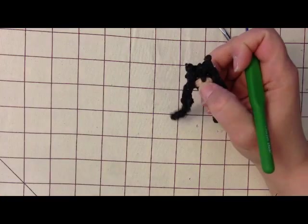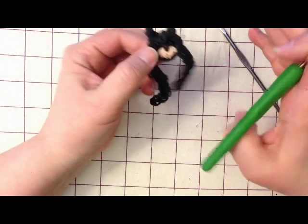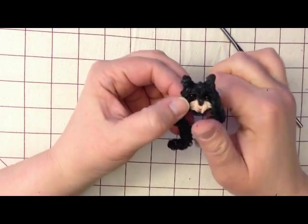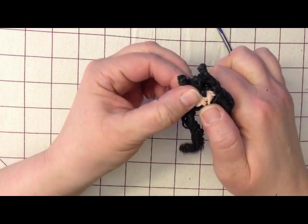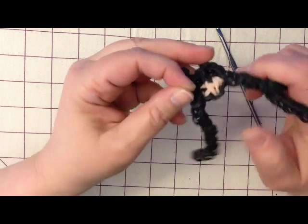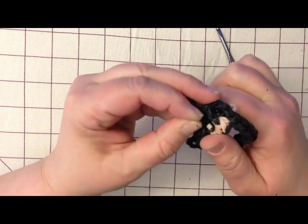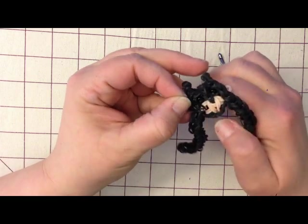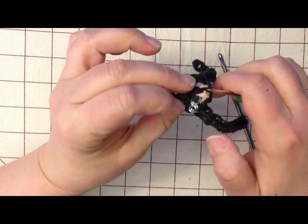So grab a single black band for the mouth and what we're going to do is stab him from the back of the head forward and pull that through. Oh, I didn't pull it through far enough. Grab the band and pull it to the back like that.